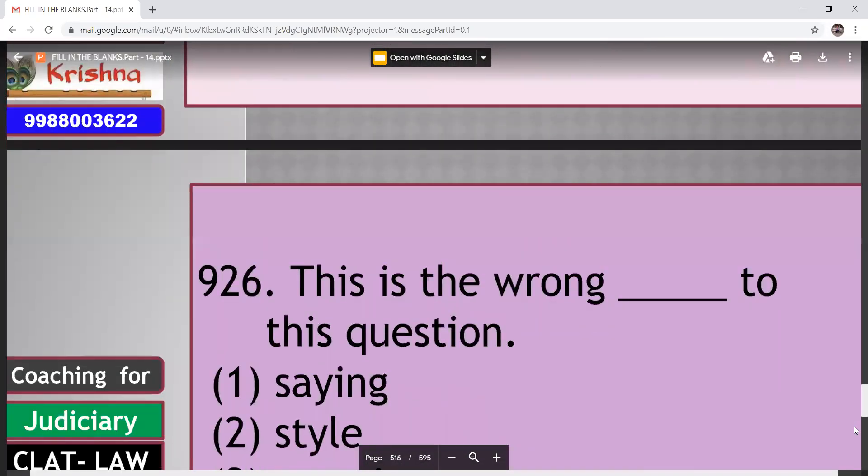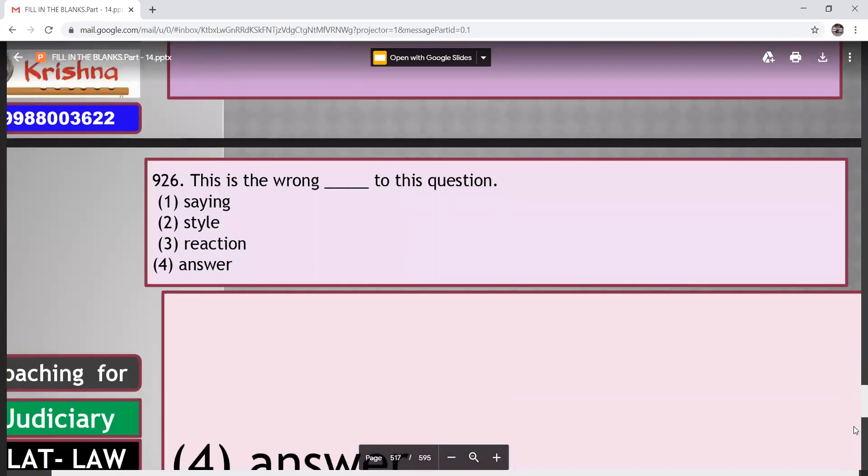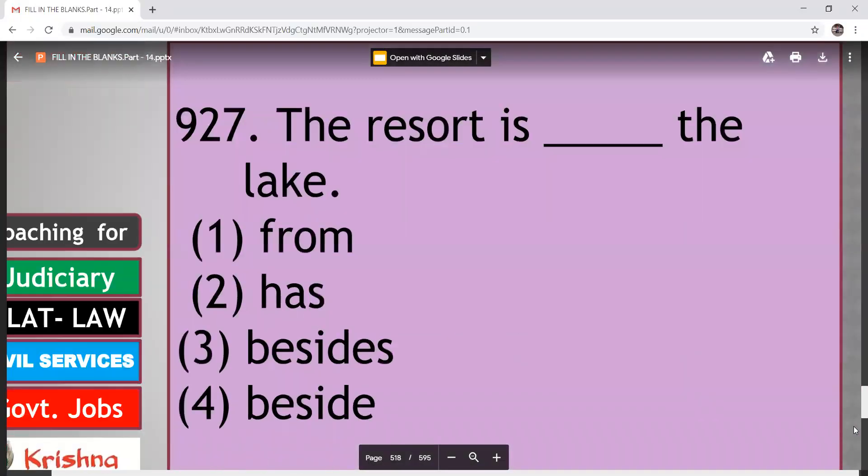This is the wrong dash to the question. Say, style, reaction, answer. So what do you have to say? That is answer. This is the wrong answer to this question. That is fourth option. Next. Resort is the dashed lake. From, has, besides, beside. So here the answer is by the side of. That is beside. Beside means by the side of.